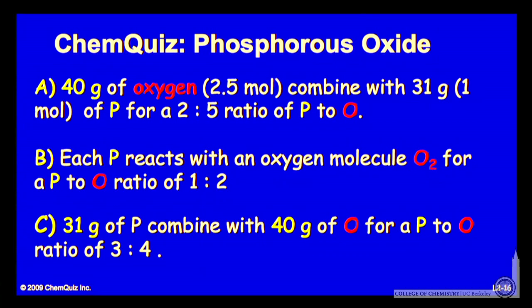Let's look at a possible argument for each of the three answers. Answer A: 40 grams of oxygen is used, 2.5 moles, and that combines with 31 grams of phosphorus, one mole, for a P to O ratio of 2 to 5.